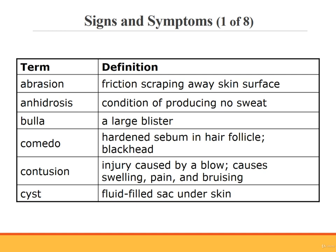A bulla is a large blister. A comedo is a collection of hardened sebum in a hair follicle; it's also commonly known as a blackhead. A contusion is an injury caused by a blow to the body. It causes swelling, pain, and bruising; however, the skin remains intact.